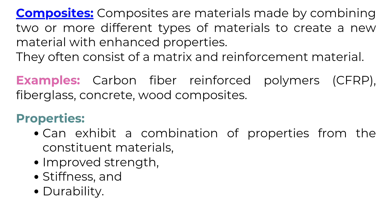Composites are materials made by combining two or more different types of materials to create a new material with enhanced properties. They often consist of a matrix and reinforcement material. Examples include carbon fiber reinforced polymers (CFRP), fiberglass, concrete, and wood composites. Properties: can exhibit a combination of properties from constituent materials, with improved strength, stiffness, and durability.